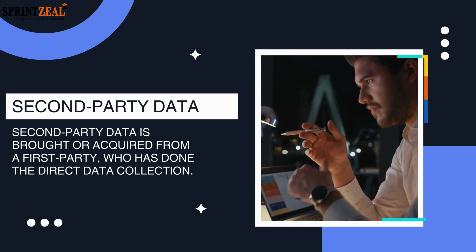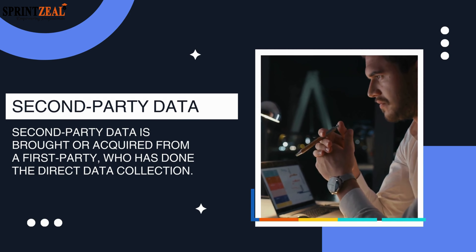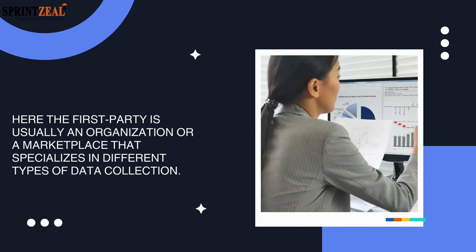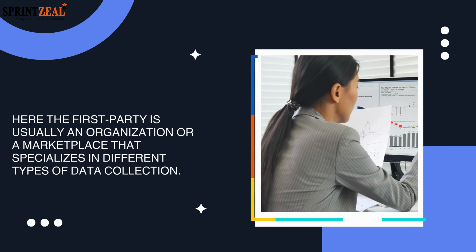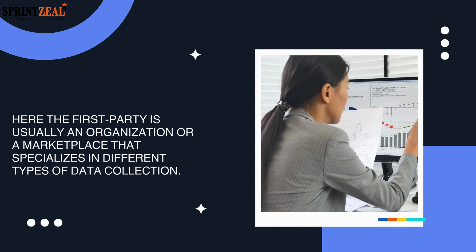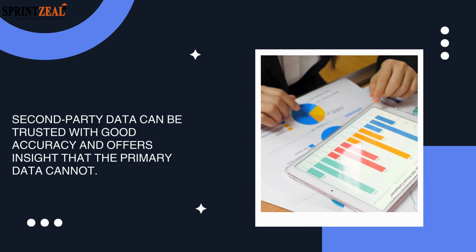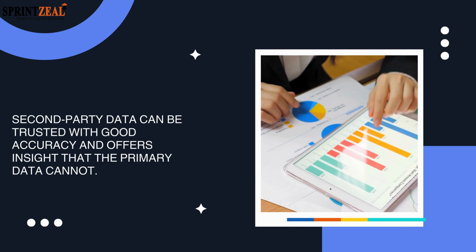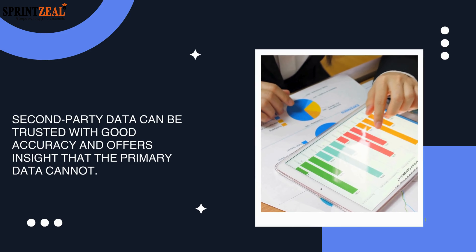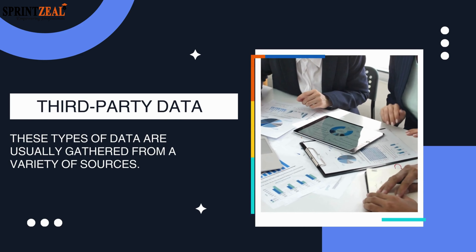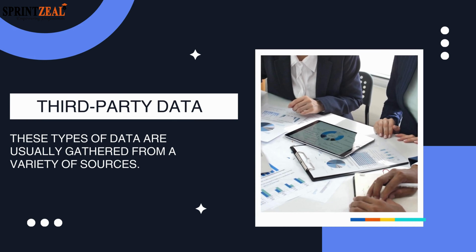Second-party data is bought or acquired from a first party who has done the direct data collection. Here, the first party is usually an organization or a marketplace that specializes in different types of data collection. Second-party data can be trusted with good accuracy and offers insights that primary data cannot.